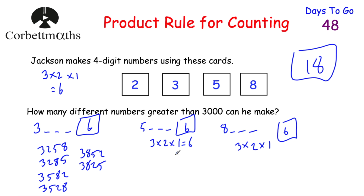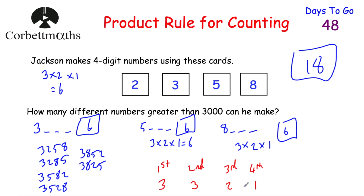There's also another approach using the product rule directly. For the first digit, it must be 3, 5, or 8 — 3 choices. For the second digit, we've used one digit, but now we can use any of the remaining three including 2 — so 3 choices. Then 2 choices for the third digit, and 1 for the last. So 3 × 3 × 2 × 1 = 18. There are 18 possible numbers greater than 3,000. Well done if you got that.